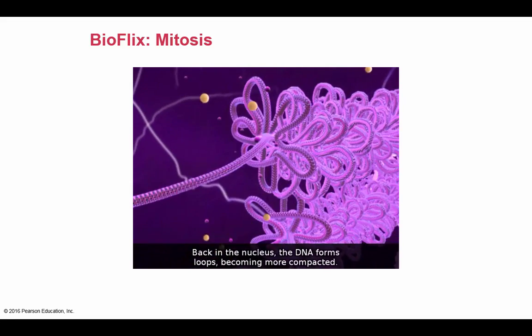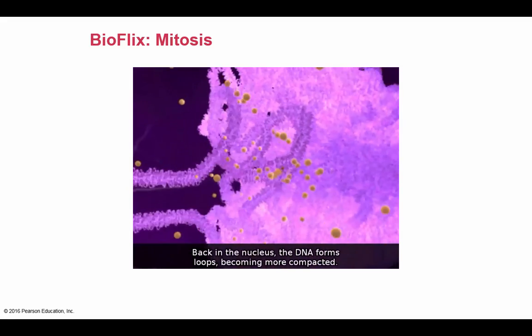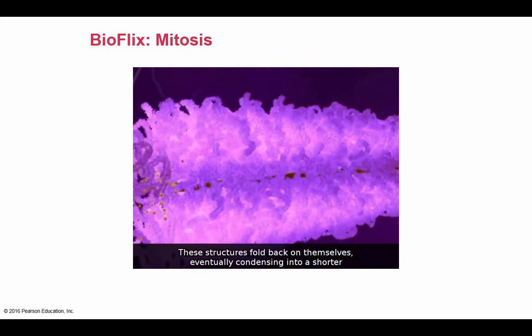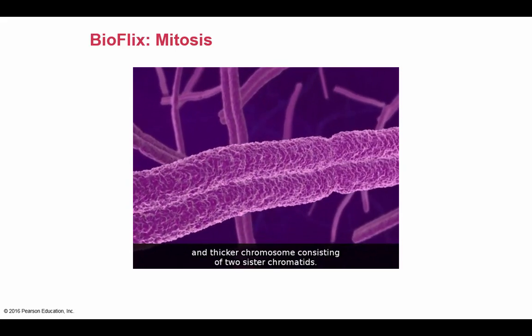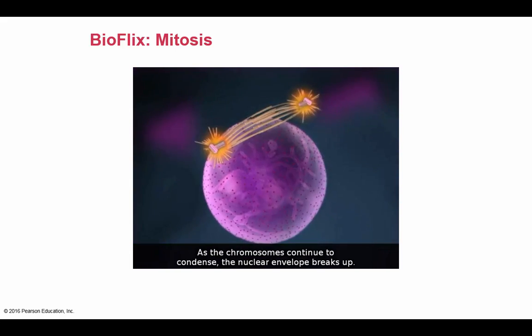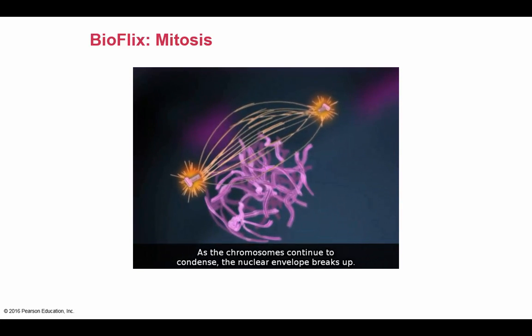Back in the nucleus, the DNA forms loops, becoming more compacted. These structures fold back on themselves, eventually condensing into a shorter and thicker chromosome consisting of two sister chromatids. As the chromosomes continue to condense, the nuclear envelope breaks up.